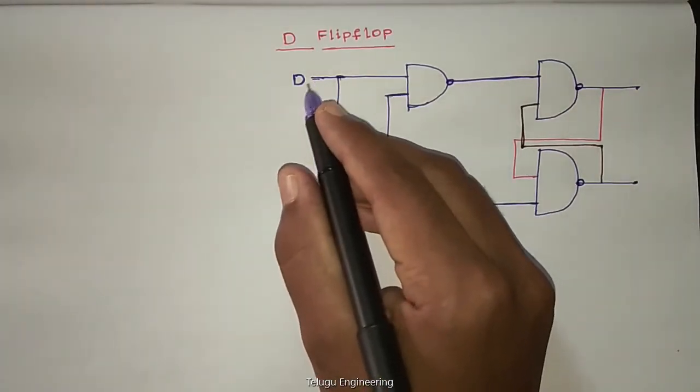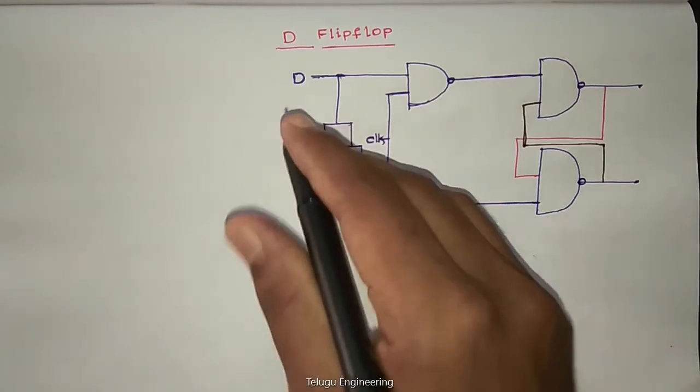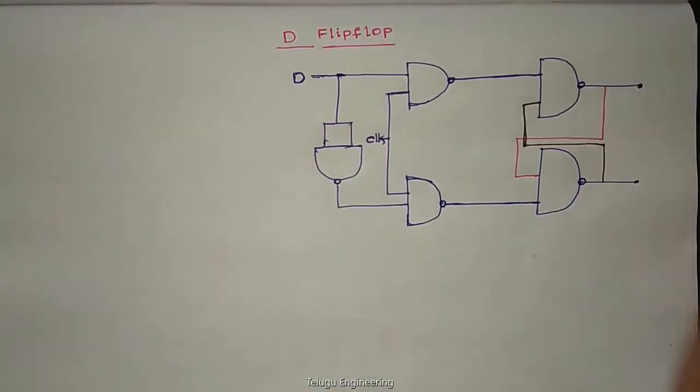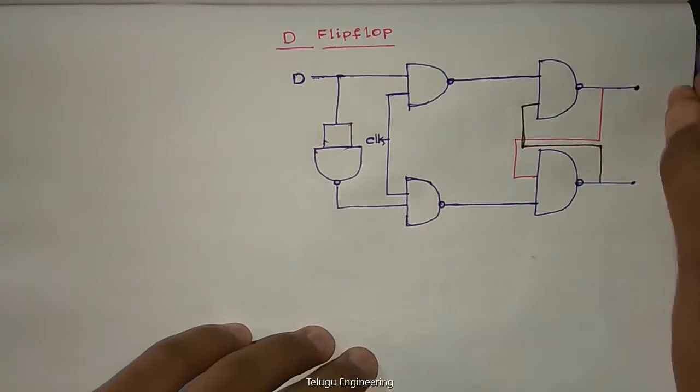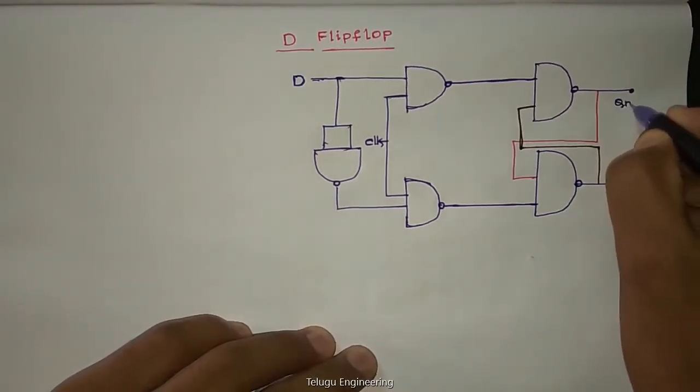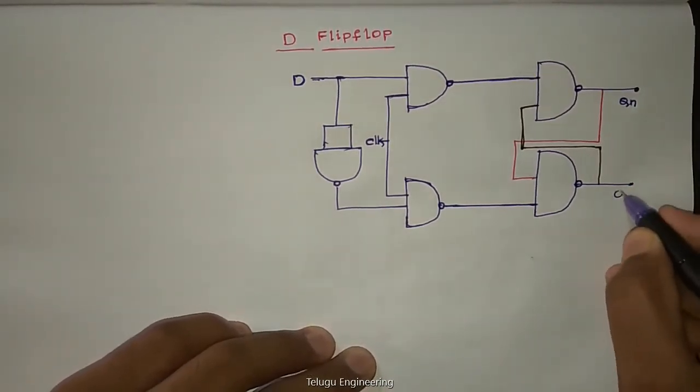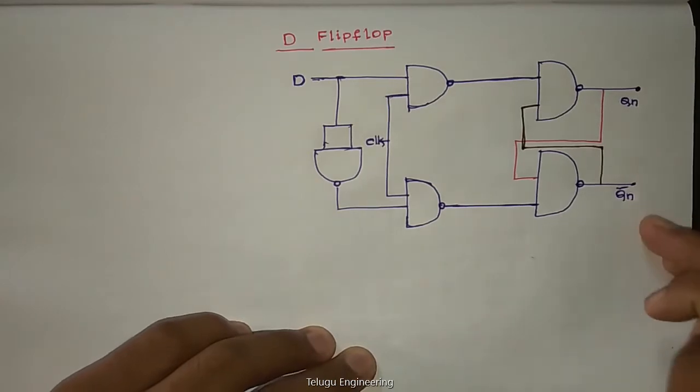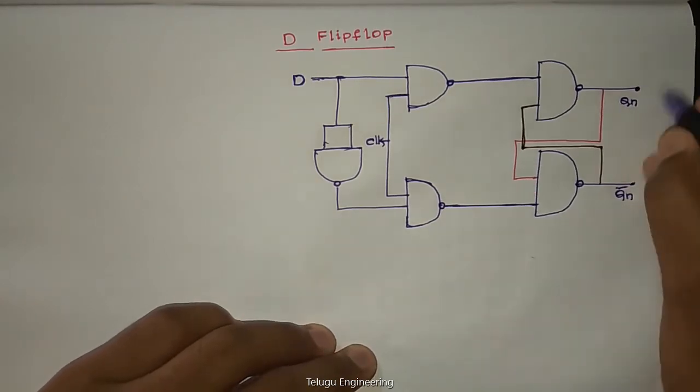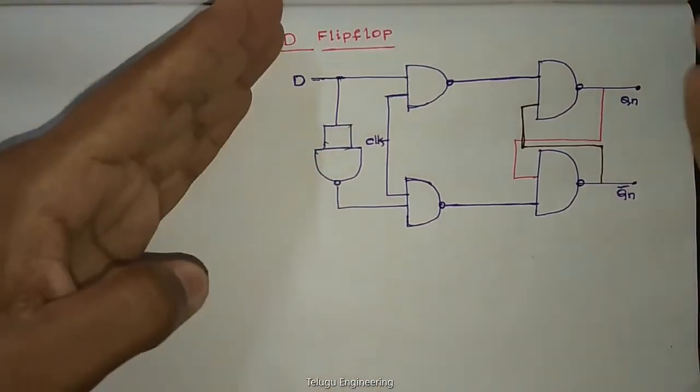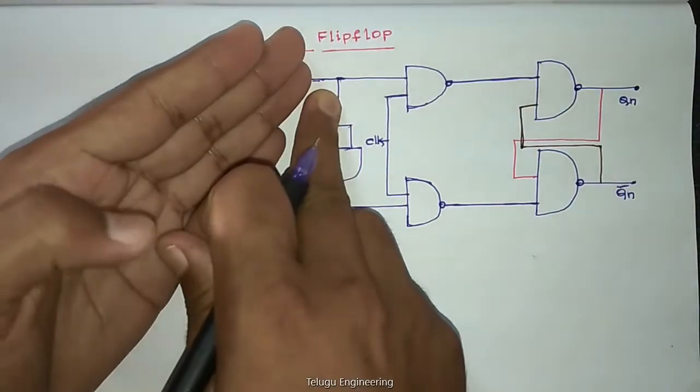This D flip-flop functionality: let Qn be here, Qn bar. These are our present state input already. D if present one, D apply.